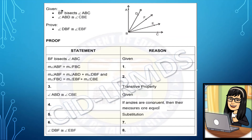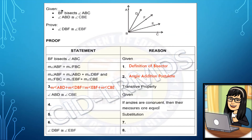Since BF bisects angle ABC, therefore measure angle ABF is equal to measure angle FBC — reason: definition of angle bisector. From the figure, measure angle ABF equals measure angle ABD plus measure angle DBF, and measure angle FBC equals measure angle EBF plus measure angle CBE — reason: angle addition postulate. Since measure angle ABF equals measure angle FBC, we can conclude that measure angle ABD plus measure angle DBF equals measure angle EBF plus measure angle CBE — reason: transitive property.